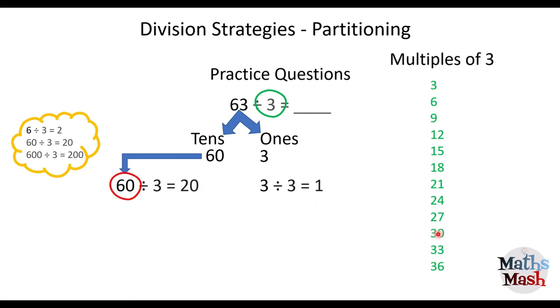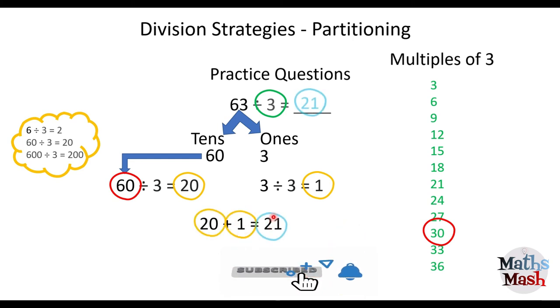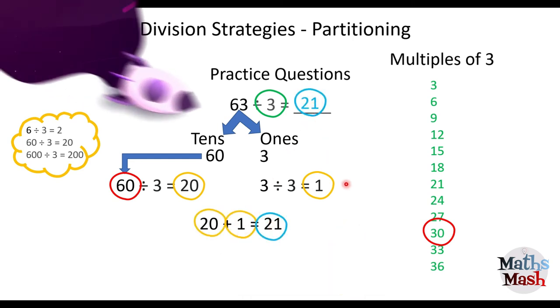All right. And again, 60 is double 30, which is 10 times 3. And 3 divided by 3 is 1. So I'm going to use the 20 and the 1 here. Add them together. And that's going to give me 21. So 63 divided by 3 is 21.